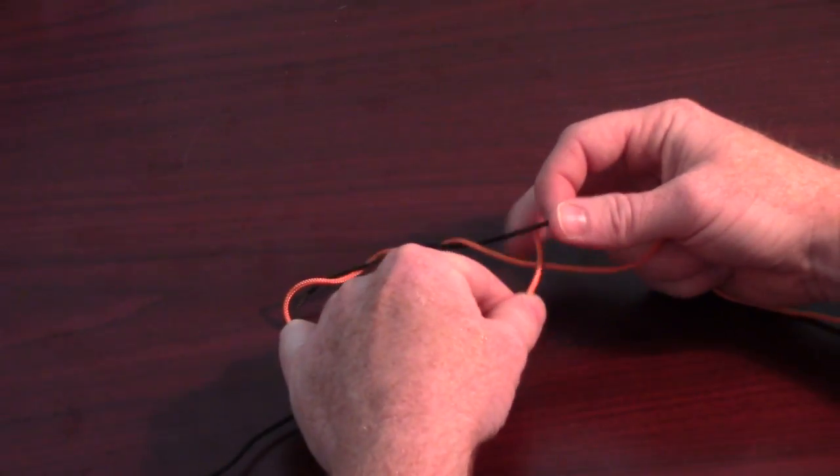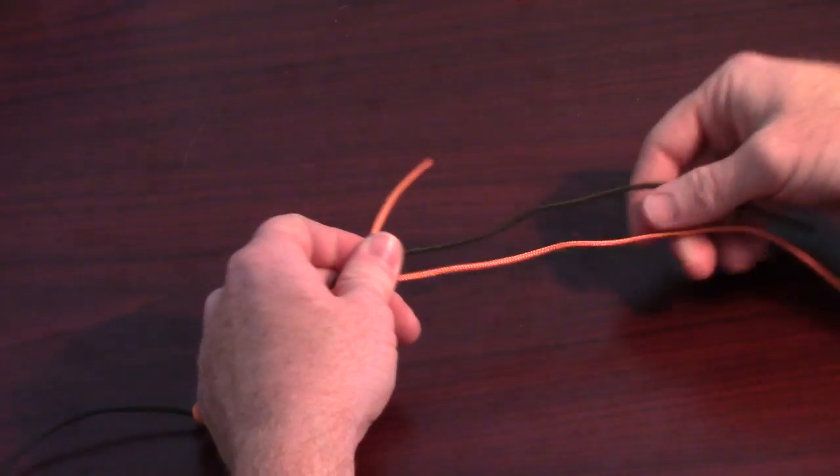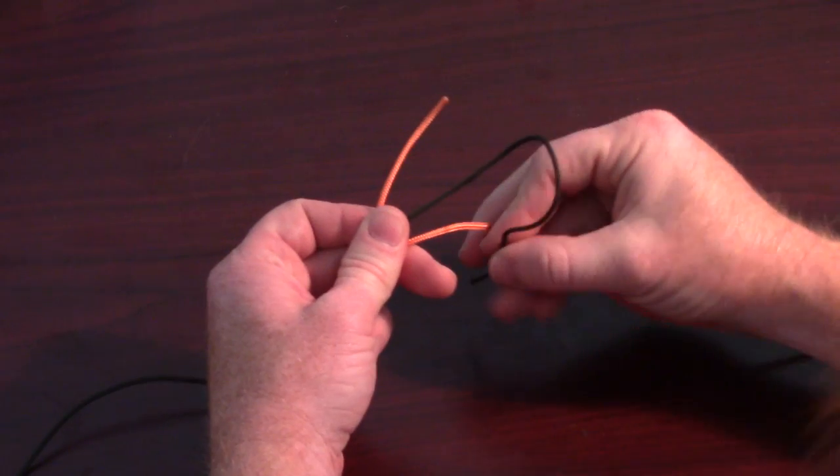Take the tag end and put it between the space created by the twist. Hold the tag end in one hand in a way that also holds a space between the two lines open.